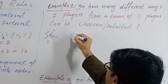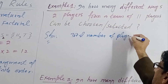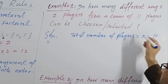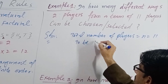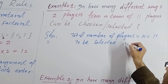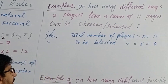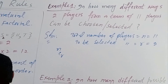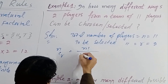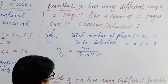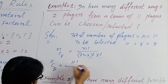Solution: Total number of players n equals eleven. Players to be selected r equals two. Since there is no order, we use combination: nCr equals n factorial divided by (n minus r) factorial into r factorial. So this is 11C2 equals 11 factorial divided by (11 minus 2) factorial into 2 factorial.